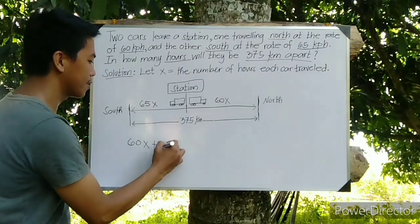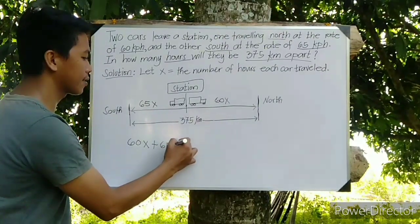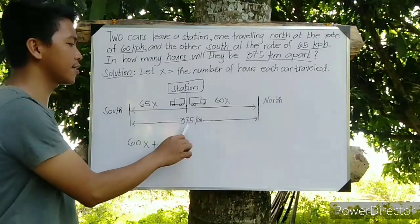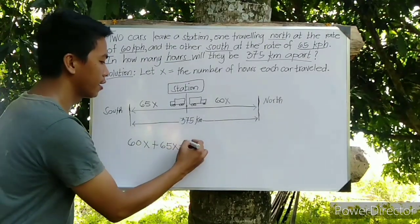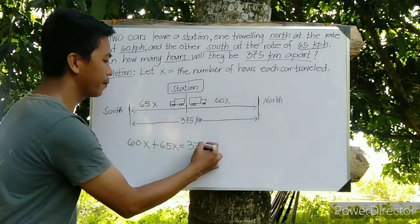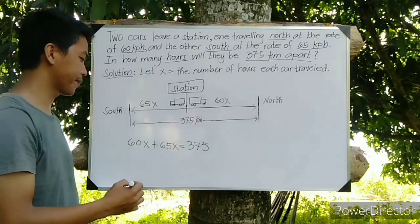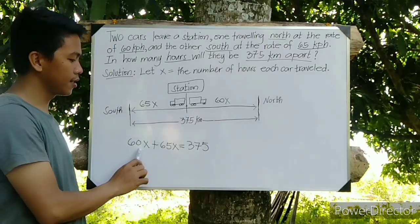Then similar terms we can add that one, that is 125X equals 375.